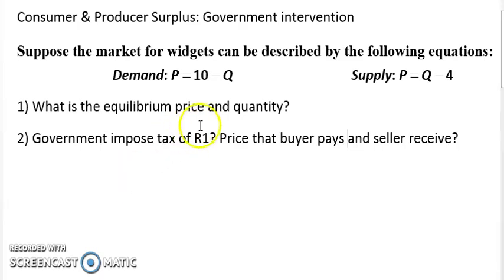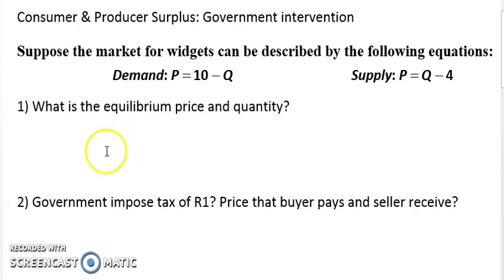We have a market for widgets with a demand curve and supply curve. The first question is fairly straightforward: what's the equilibrium price and quantity? To measure that, we're going to set the demand and supply curves equal to one another, so 10 minus Q equals Q minus 4.